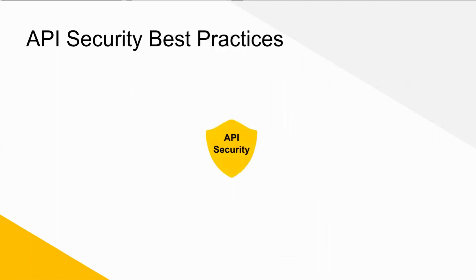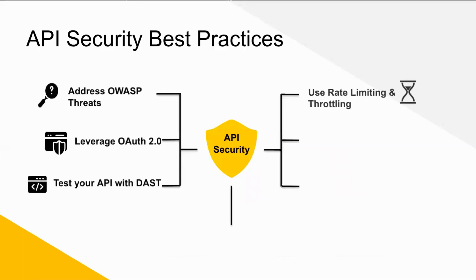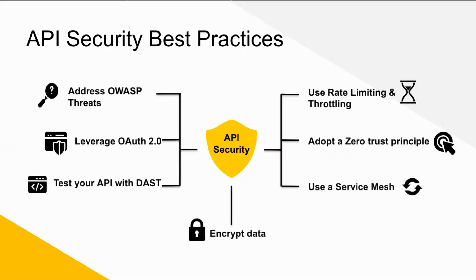It is very important and critical to address the OWASP Top 10 threats when APIs are being created. Since APIs have become an integral part of our everyday work and life, it becomes vital to protect them. Some best practices to protect APIs include: addressing OWASP threats, leveraging OAuth 2.0 authentication mechanisms, testing your APIs with DAST, encrypting your data, using rate limiting and throttling, adopting a zero trust architecture, and use of a service mesh.